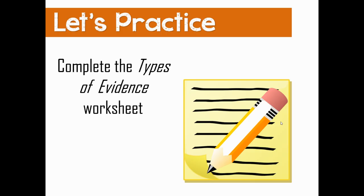If you're in class with me, we are going to work on the types of evidence worksheet. I'm going to give you a list of different types of evidence that we might collect from a crime scene, and you are going to classify each piece of evidence as either direct or circumstantial. If it is circumstantial evidence, you'll further classify it as either physical or biological. If you're just tuning in for the video lesson, I'll see you in the next lesson.